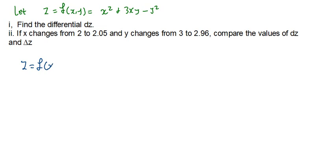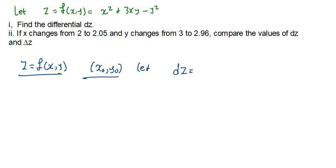So if our function z = f(x, y) is differentiable at some point (x₀, y₀), then we let dz equal the partial of z with respect to x multiplied by dx, plus the partial of z with respect to y multiplied by dy.